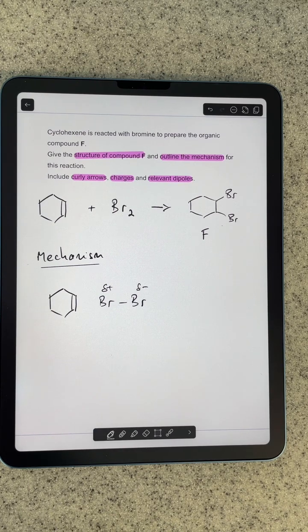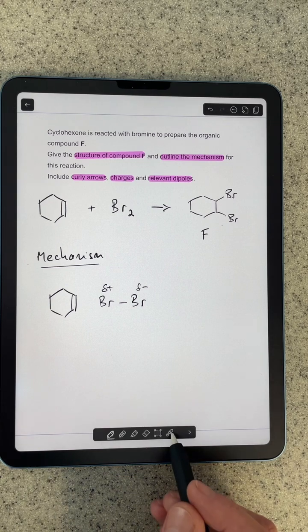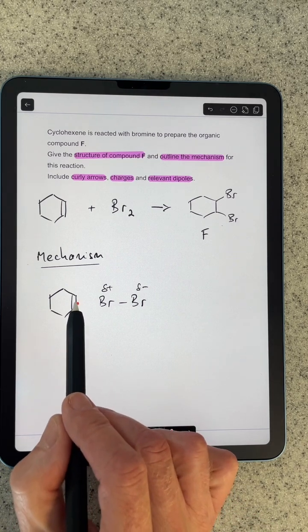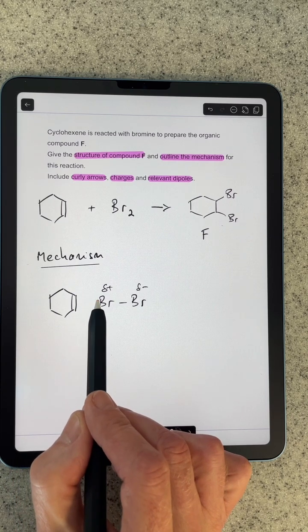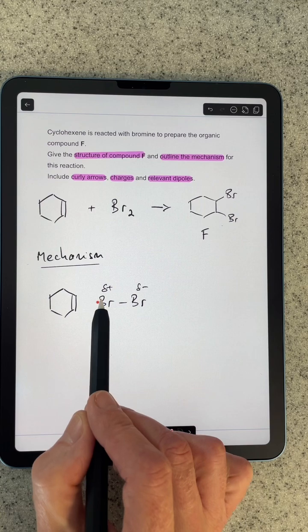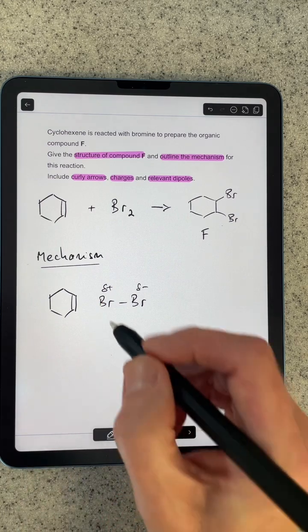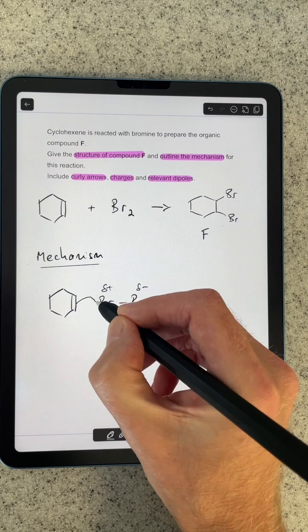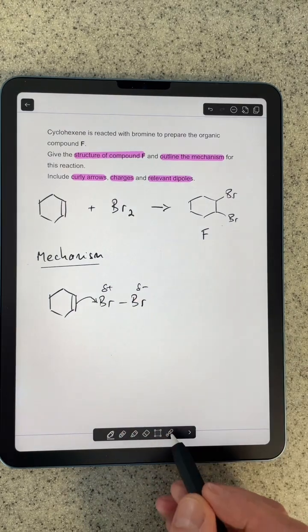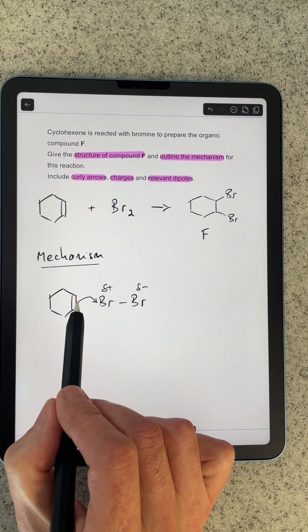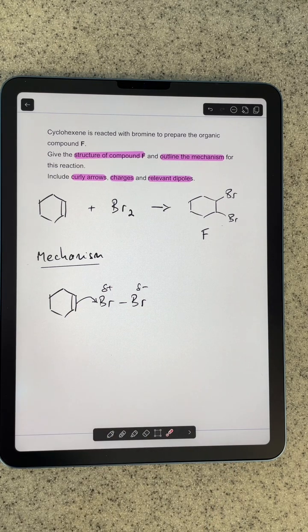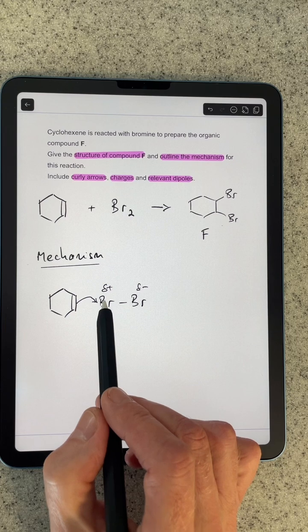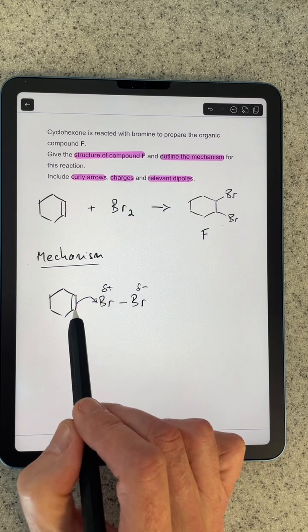The next thing we've got to do is our first curly arrow. A pair of electrons in the pi bond are going to be attracted and move out to that slightly positive bromine. We draw a curly arrow to show that. Make sure your curly arrow starts from the middle of that covalent bond. That's going to bond the bromine to one of these carbon atoms.